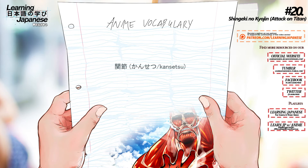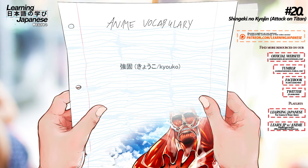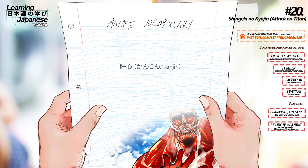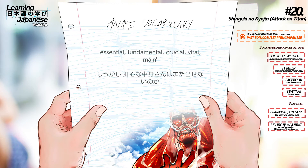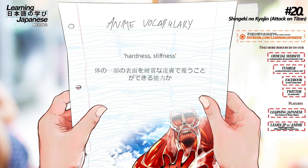関節 (kansets) — Joints. 強固 (kyouko) — Firmness, stability, security, strength. 肝心 (kanjin) — Essential, fundamental, crucial, vital, main. 硬質 (goushitsu) — Hardness, stiffness.